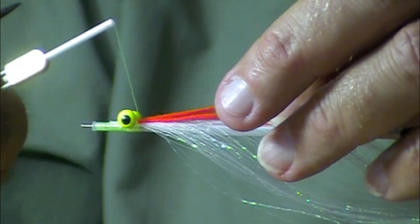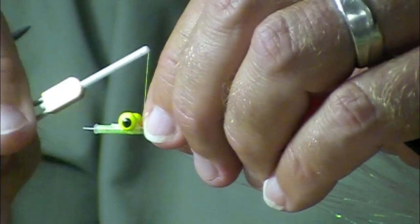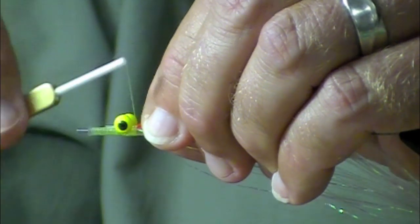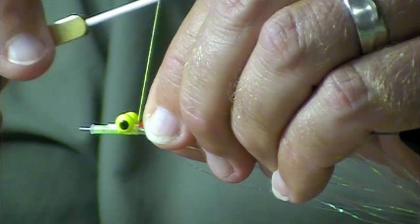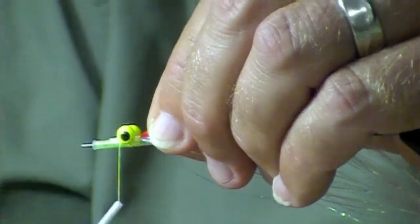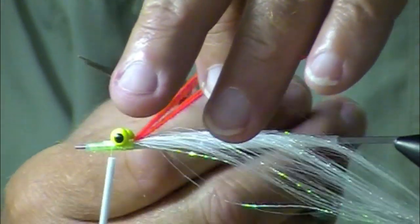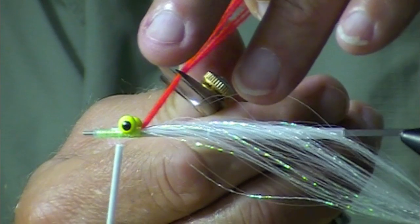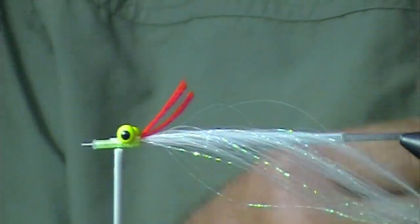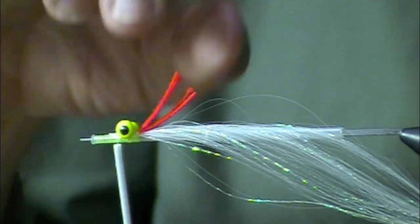Then we're going to wind back over it. One, two, three, four, five, six, seven - seven times this time around. Then wind forward. Now trim this off about there. There are your bleeding gills. We're going to turn this over.